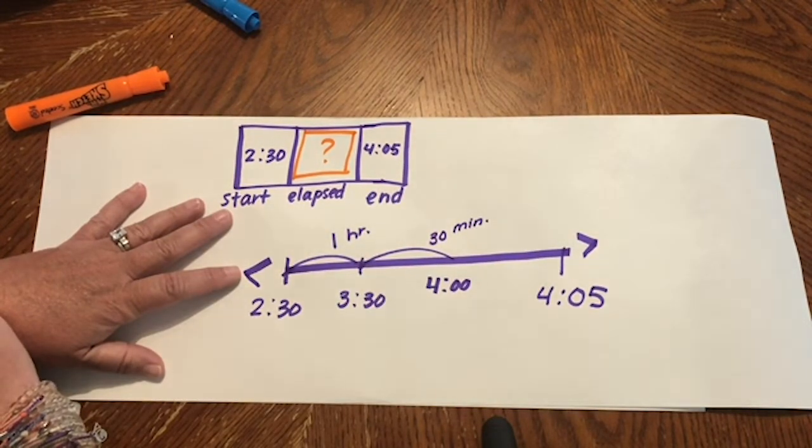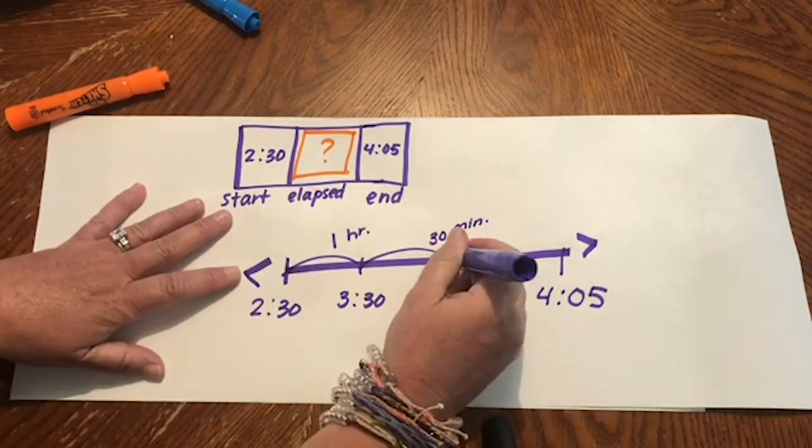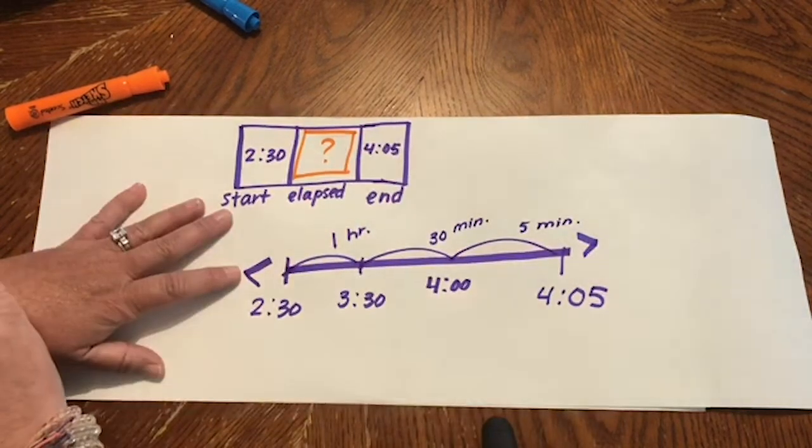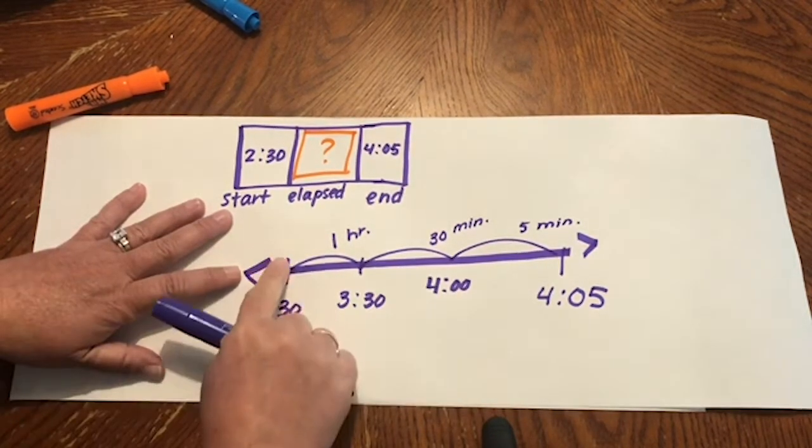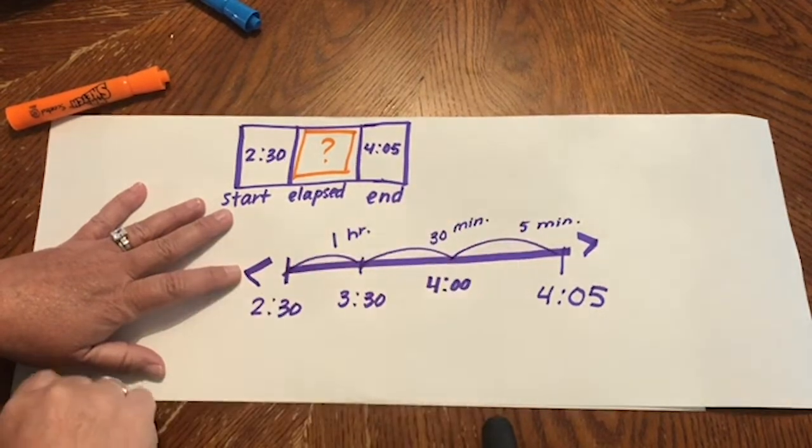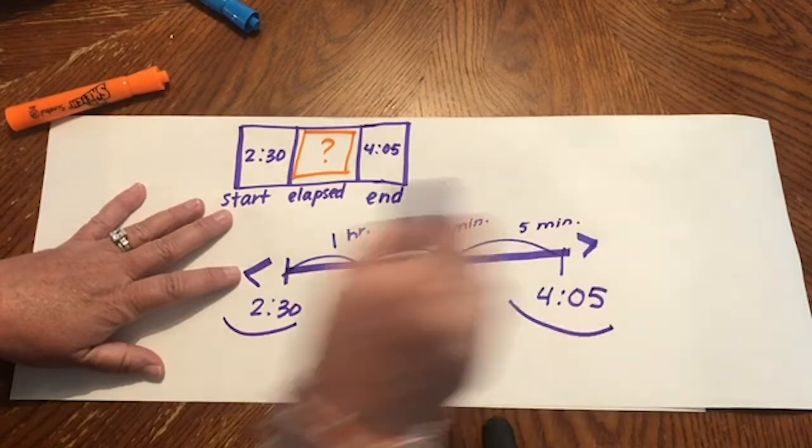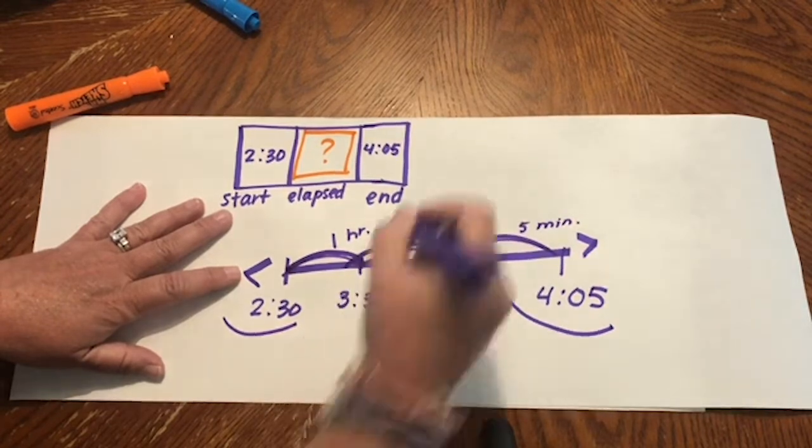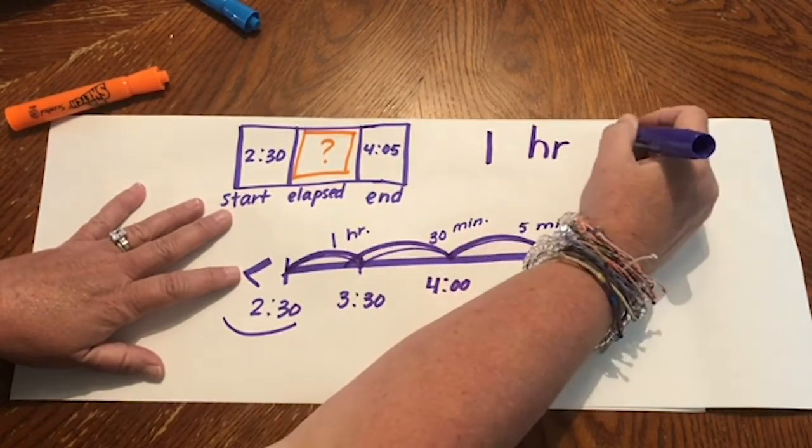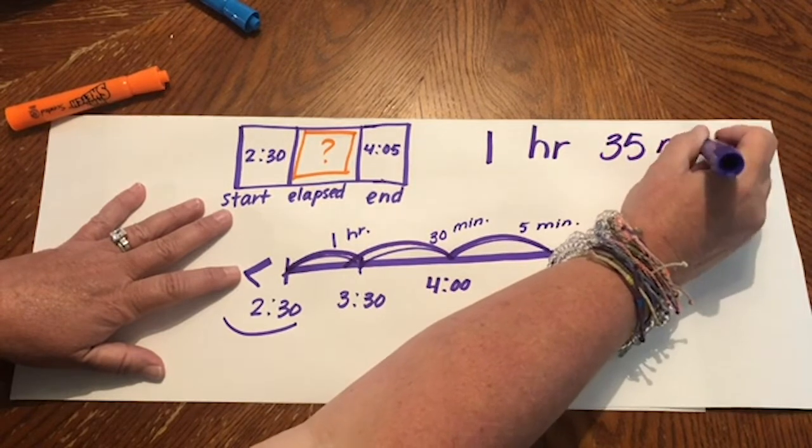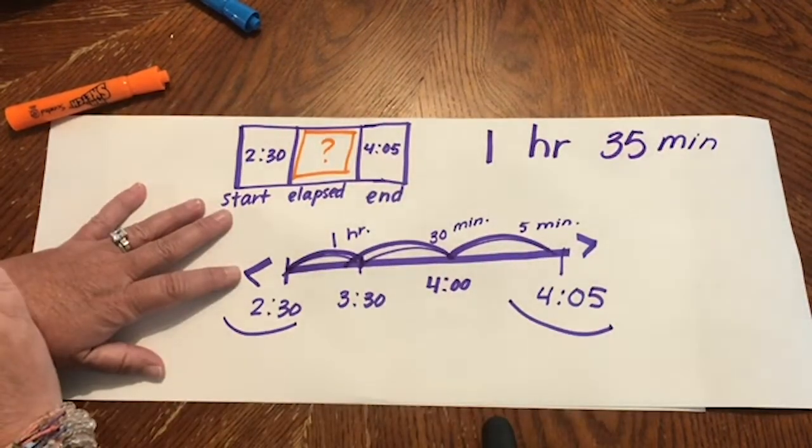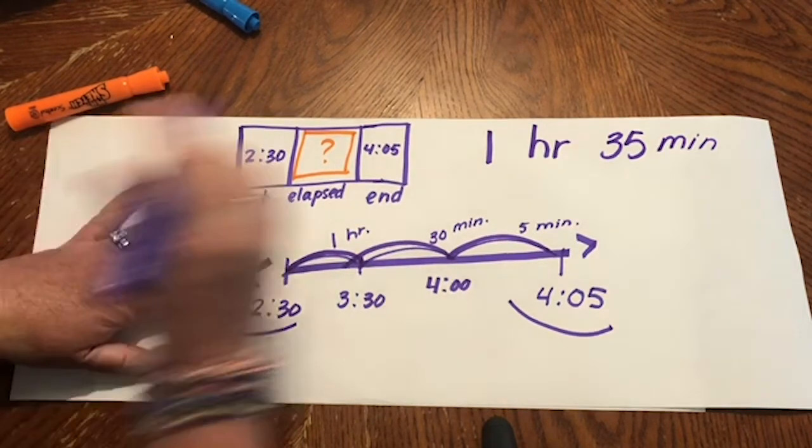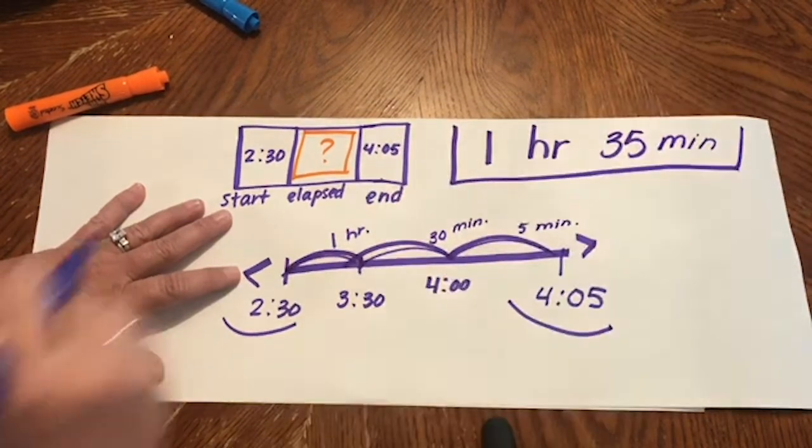Now I'll go to 4.05. From 4 o'clock to 4.05 is 5 minutes of elapsed time. Now you can see in an organized way how the elapsed time between 2.30 and 4.05 is 1 hour and 35 minutes. 1 hour and 35 minutes passed by. Or we could say was the amount of elapsed time between the beginning of the movie and the end of the movie.